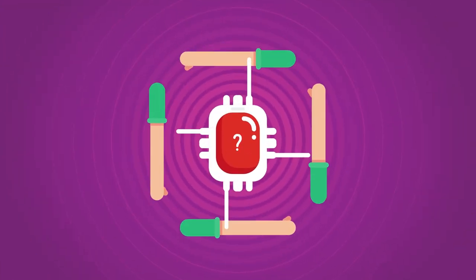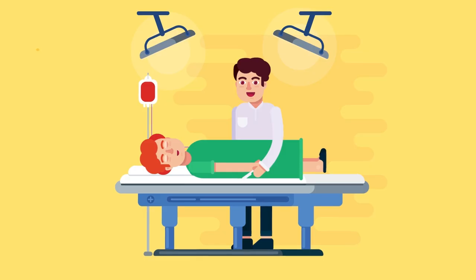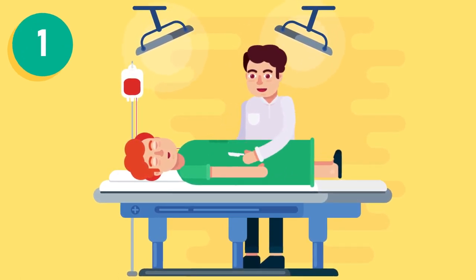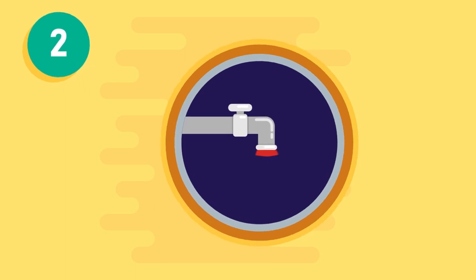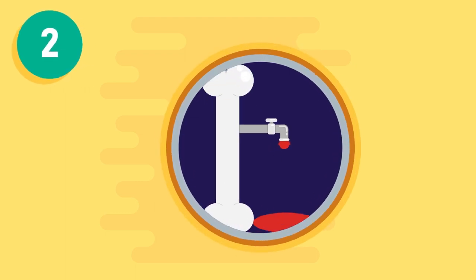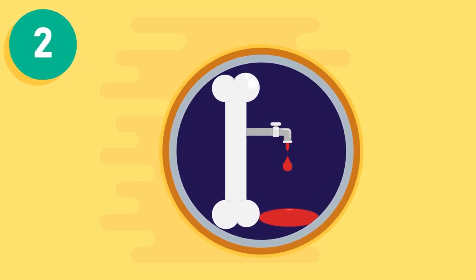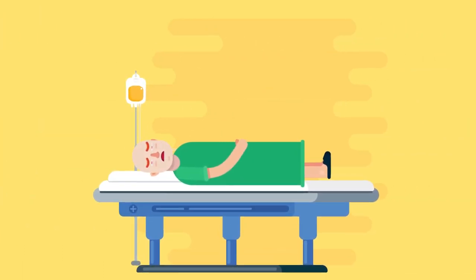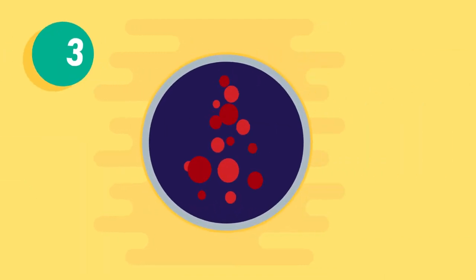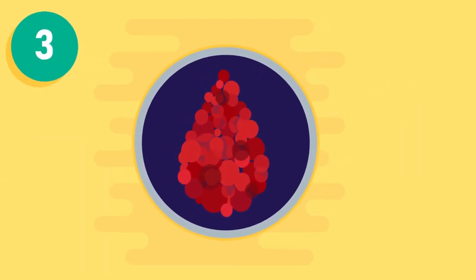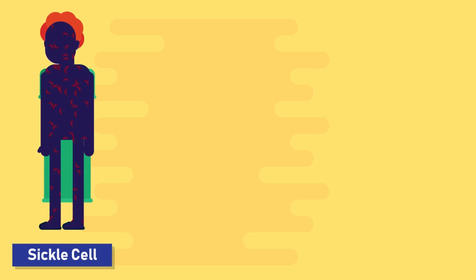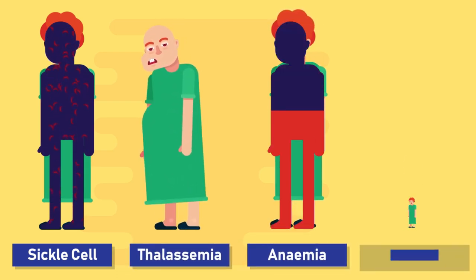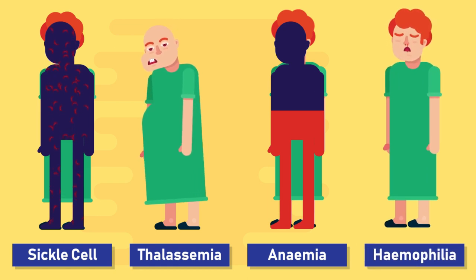Why are blood transfusions performed? Loss of blood during surgery, from an injury, or an illness. An inability to make enough blood — some illnesses and treatments can harm the bone marrow's ability to produce blood; for example, chemotherapy decreases production of new blood cells. Transfusions also help prevent complications from existing blood or bleeding disorders, such as sickle cell disease, thalassemia, anemia caused by kidney disease, haemophilia, or von Willebrand disease.